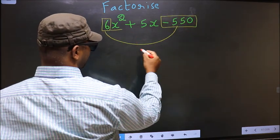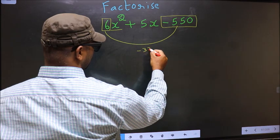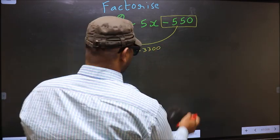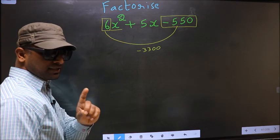So 6 into minus 550, we get minus 3300. This is your step 1.